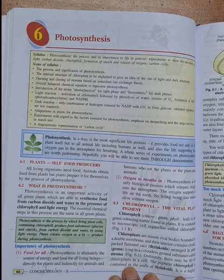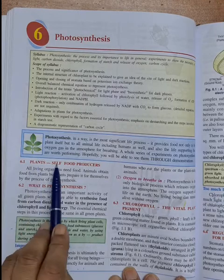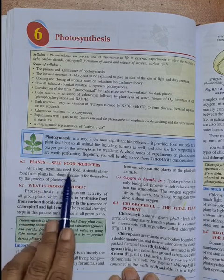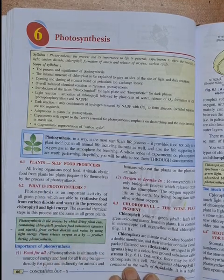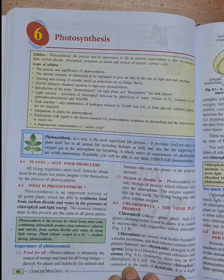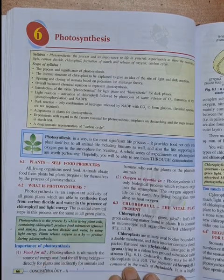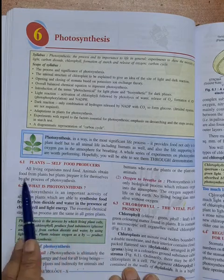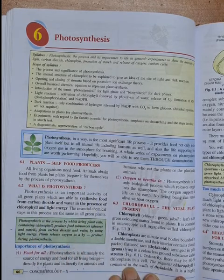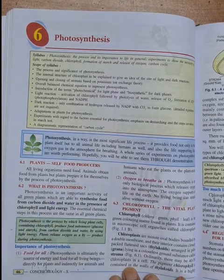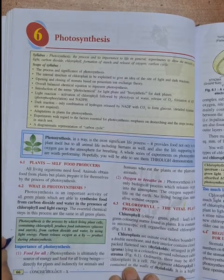We will also study the internal structure of chloroplast and experiments related to the process of photosynthesis. First, plants as self-food producers. We all know that all living organisms need food for their survival. Animals obtain this food from plants because they can't prepare their own food. But plants prepare food for themselves by the process of photosynthesis.